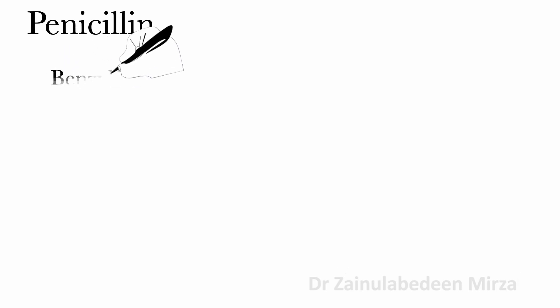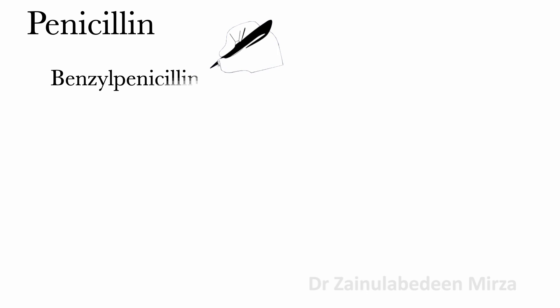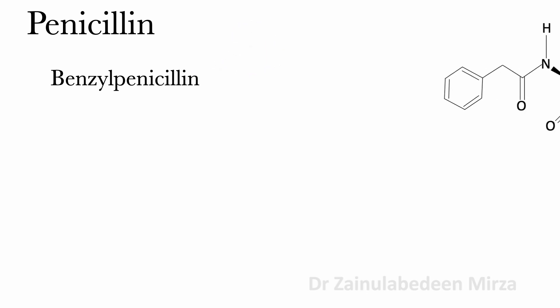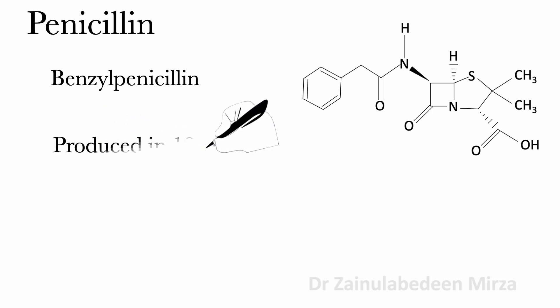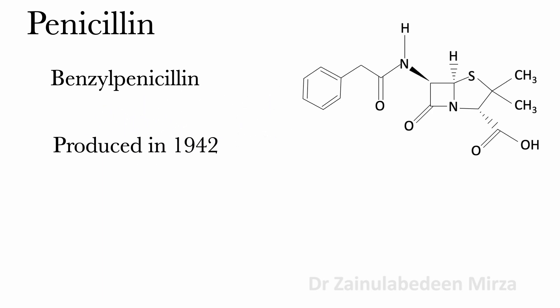Benzylpenicillin is a penicillin G compound, and it was produced in 1942 by growing the penicillin mold in deep tanks.